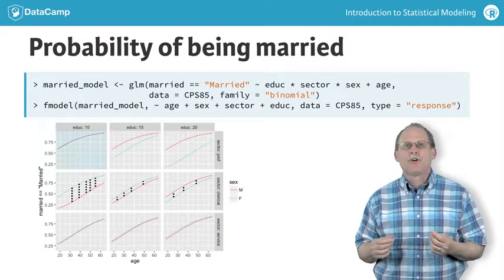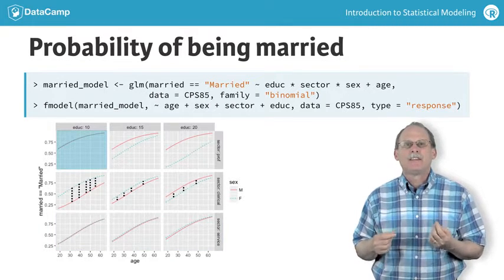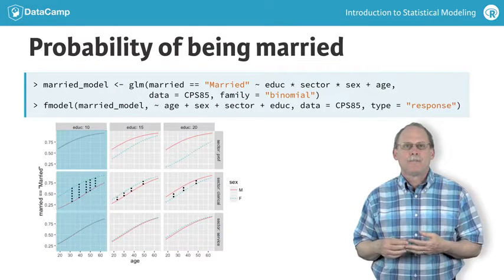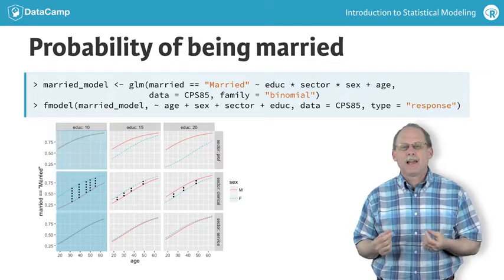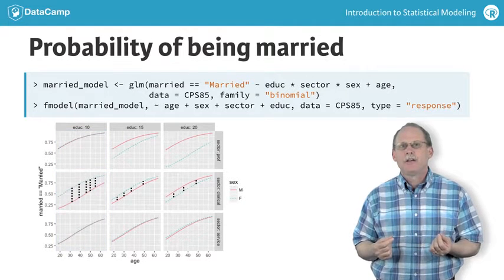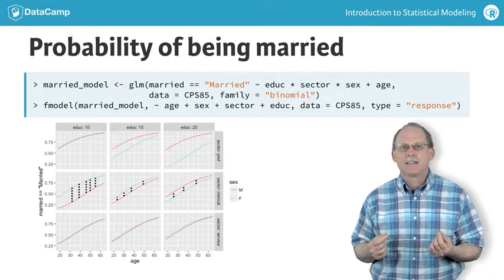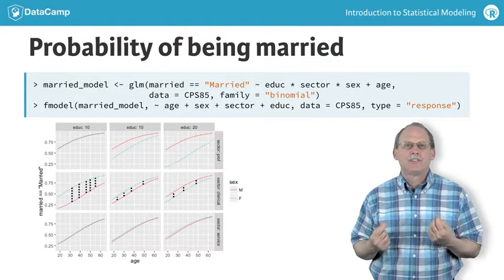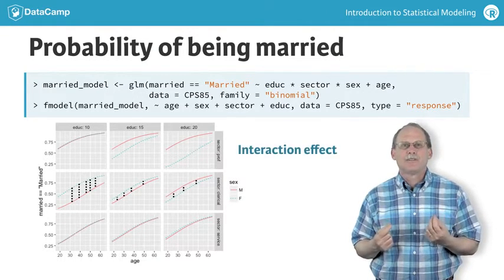Young men in the professional sector are more likely to be married than young men in other sectors. It's as if the various explanatory variables work together to determine the effect size of sex. There's a name for this. Statisticians call it an interaction effect.